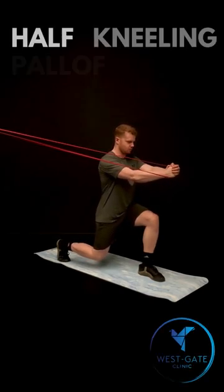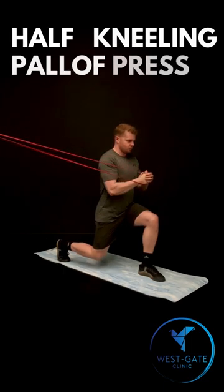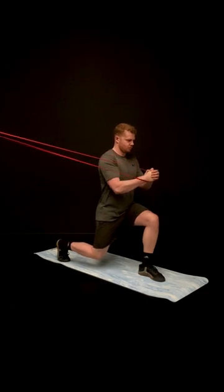This movement is what's known as an anti-rotator - you're resisting rotation against resistance. This is great for stability of the spine and developing the anti-rotator soft tissues of the opposite side.